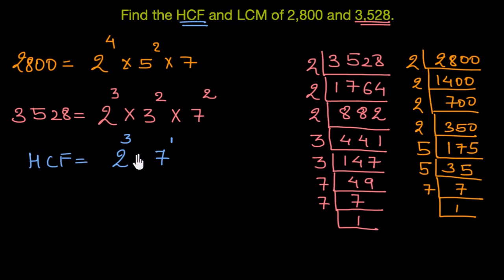Now, finally, to get the HCF, we would multiply them. So 2 to the power 3 is 8. 8 times 7 would give us 56. So the highest common factor for these two numbers is 56.